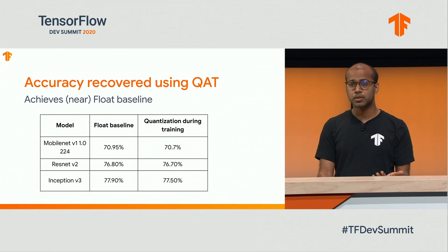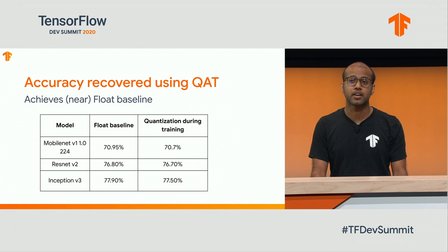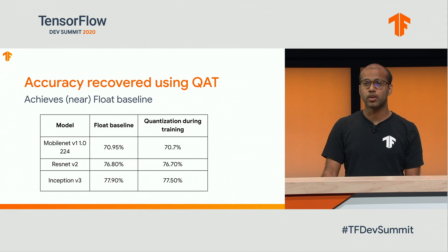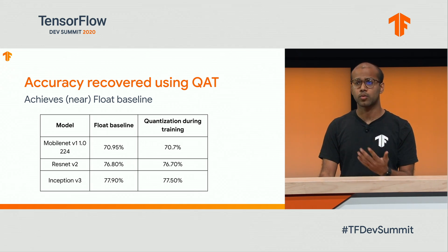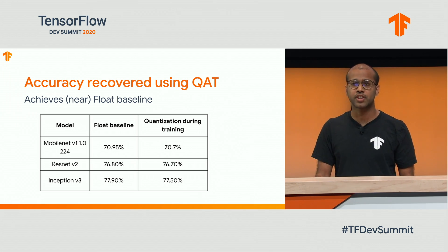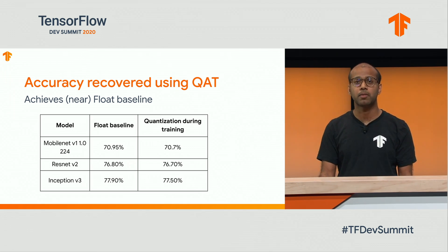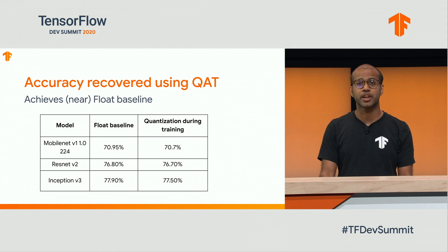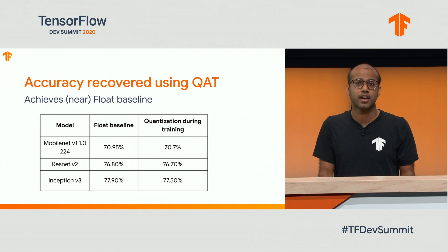Let's look at the numbers — they're pretty good. Looking at the slide, we are almost as close as the float baseline on various vision models we've tried. This is really powerful. You can actually execute a model that gives you nearly as good accuracy and is quantized.